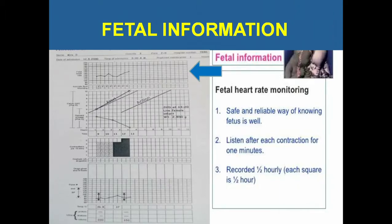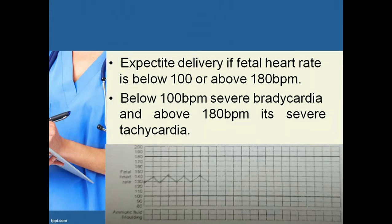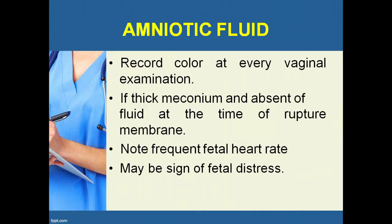Fetal information includes fetal heart rate monitoring, which is a safe and reliable way of knowing fetal well-being. It is listened to after each contraction for one minute, recorded half-hourly. Each vertical line of the rectangle represents 10 beats per minute and each horizontal side represents 30 minutes. Expected before delivery, the fetal heart rate below 100 is severe bradycardia and above 180 is severe tachycardia.